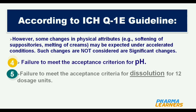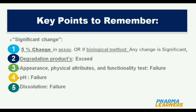The fourth criterion is failure to meet the acceptance criterion for pH, and the fifth is failure to meet the acceptance criteria for dissolution for 12 dosage units. These are the five key points you need to remember about significant changes.